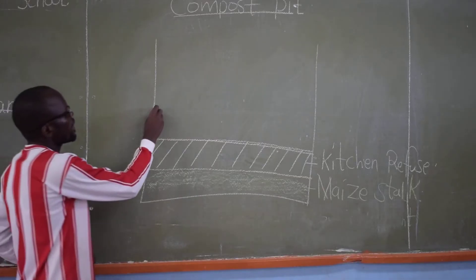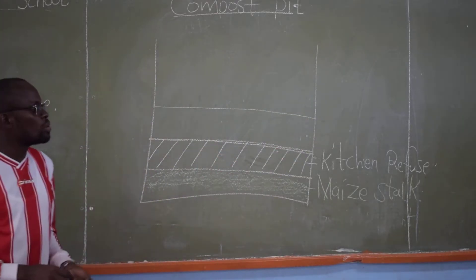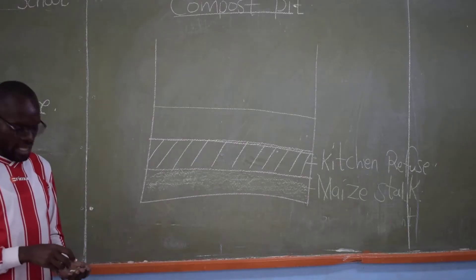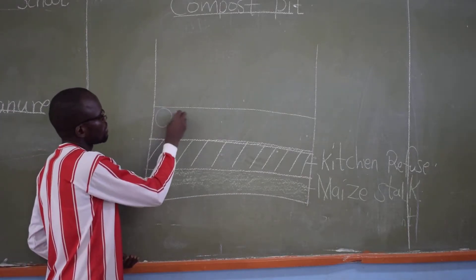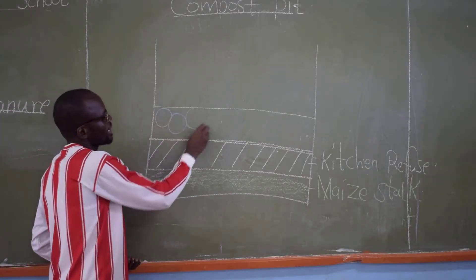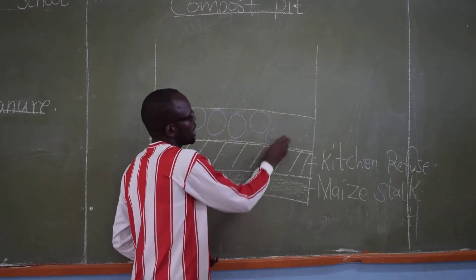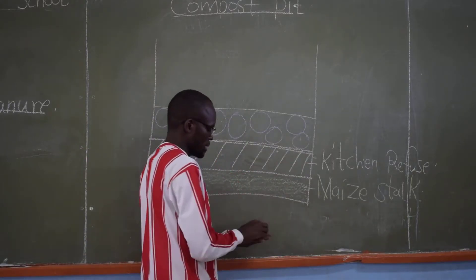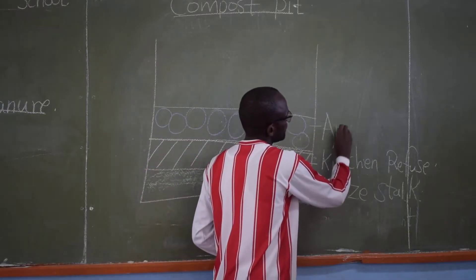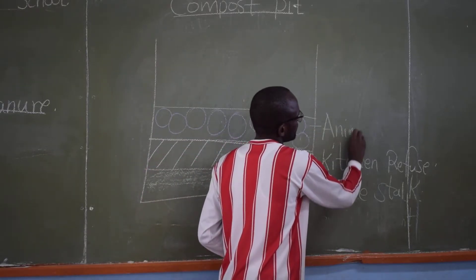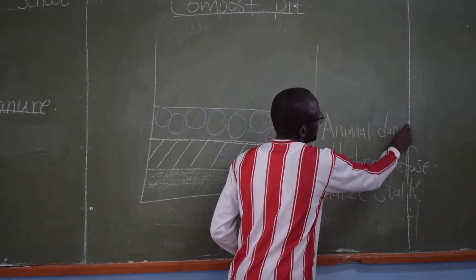The next layer is going to be animal dung. We add the animal dung on top of the kitchen refuse.